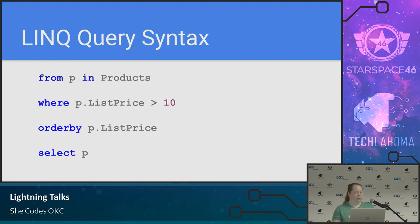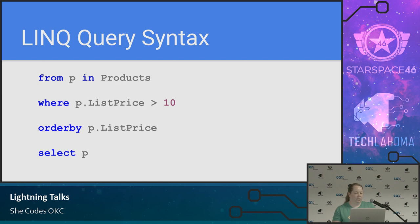With LINQ we start with the FROM, then the WHERE, then the ORDER BY, then SELECT at the end. So if you're coming from SQL, this query syntax might feel more comfortable to you. We're basically FROM an alias in our collection name — it doesn't have to be from a table. We're filtering with a WHERE.